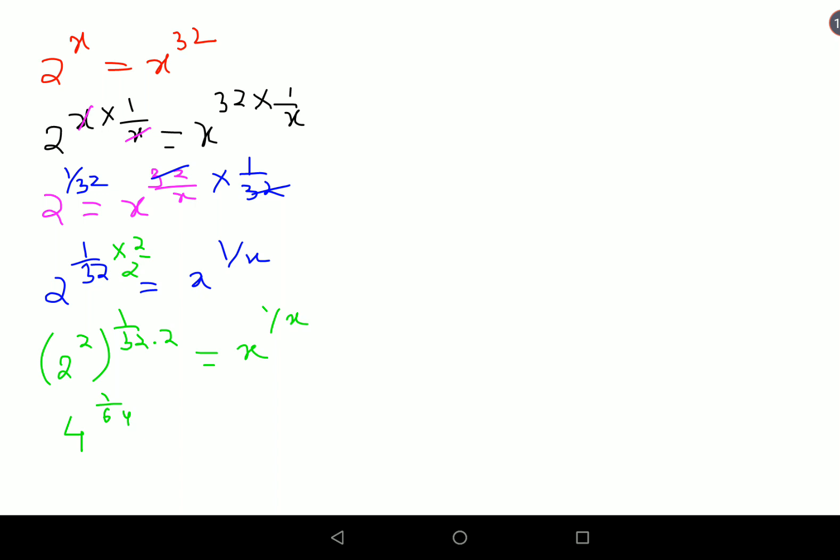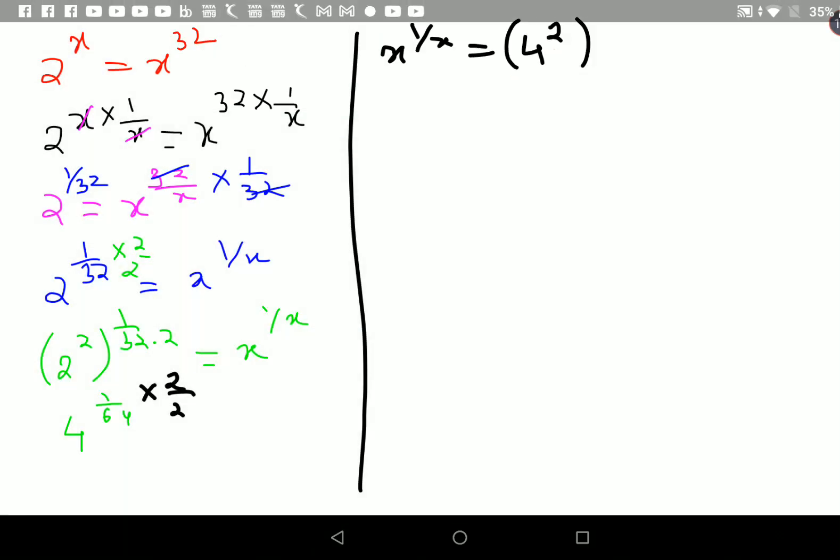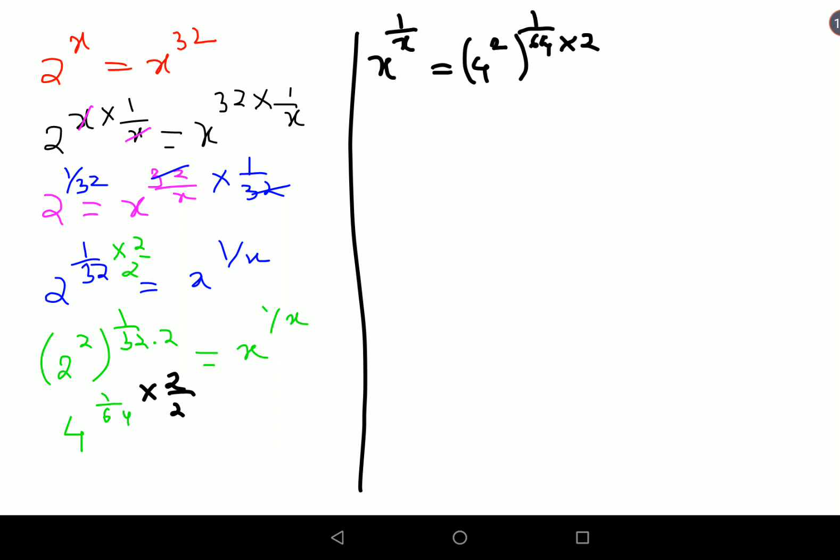Again, let's multiply the index by 2. So I will write x raised to 1 over x on this side. And this side we get 4 raised to 2, the whole raised to 1 over 64 times 2. So here I am left with 16, since 4 raised to 2 is 16. And in the index I am getting 1 over 128.